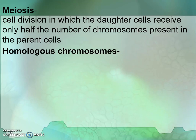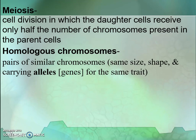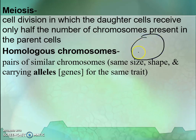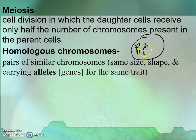For meiosis you need to know another vocabulary word: homologous chromosomes. Homologous chromosomes are pairs of similar chromosomes carrying the alleles of the genes. Going back to mitosis, we have done haploid and diploid cells. In haploid cells there is only one single chromosome, but in diploid there are two pairs of chromosomes. One chromosome comes from your dad and one chromosome comes from your mom — these form one pair of chromosomes having the same alleles.